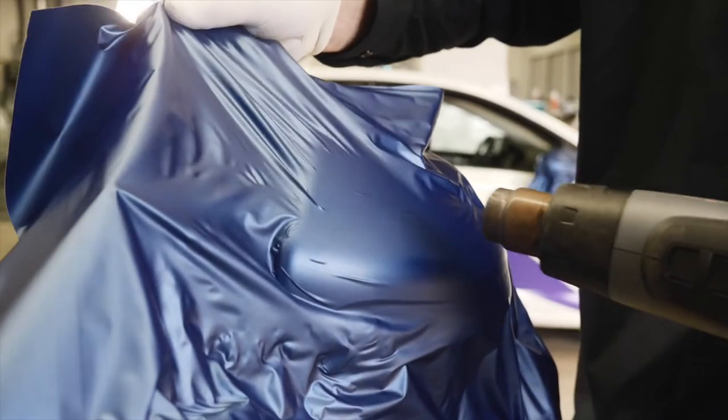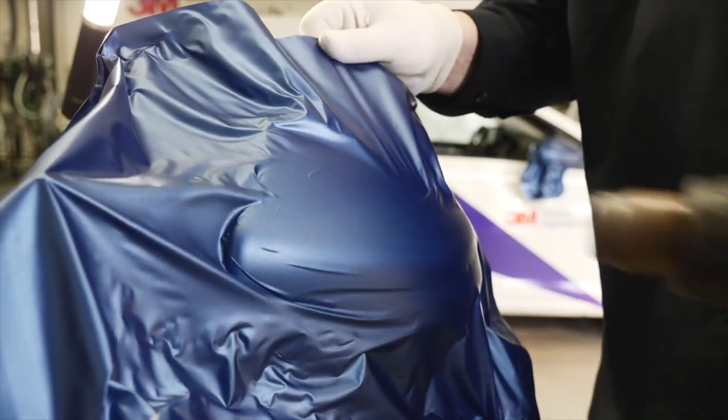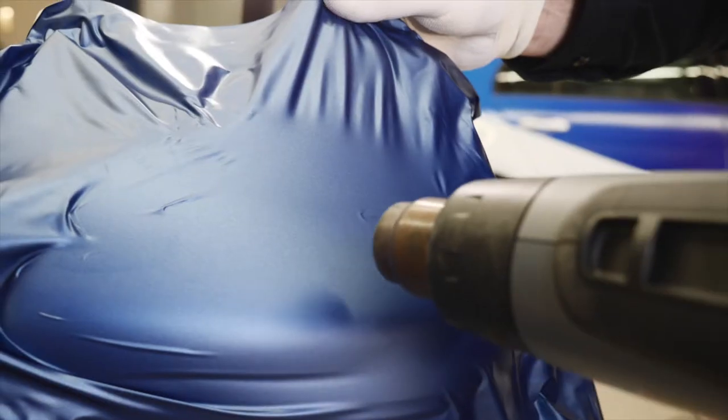Lift the film, apply heat and let it shrink around the mirror shape. Repeat this process step by step until the edge of the mirror is covered by film.